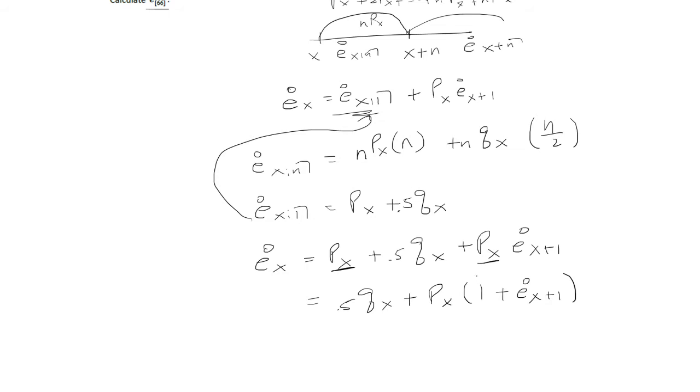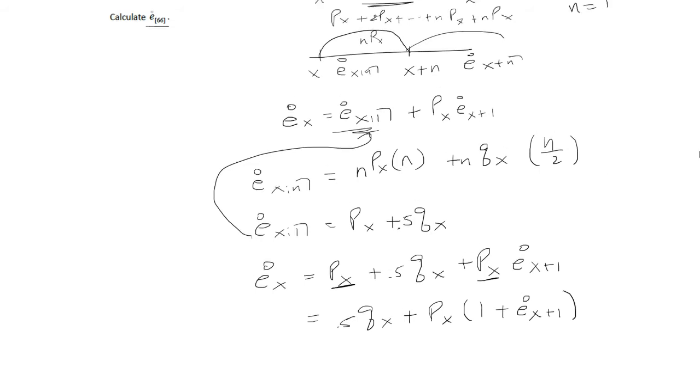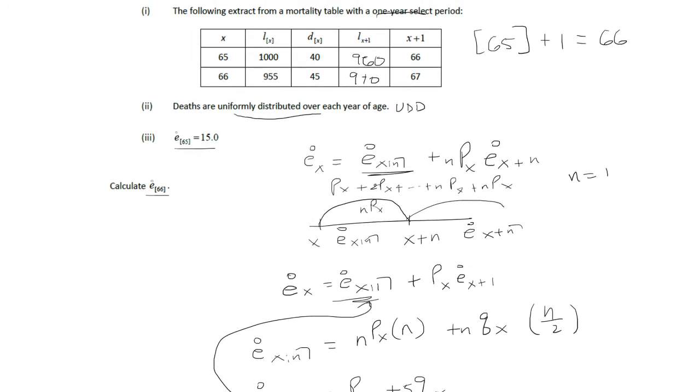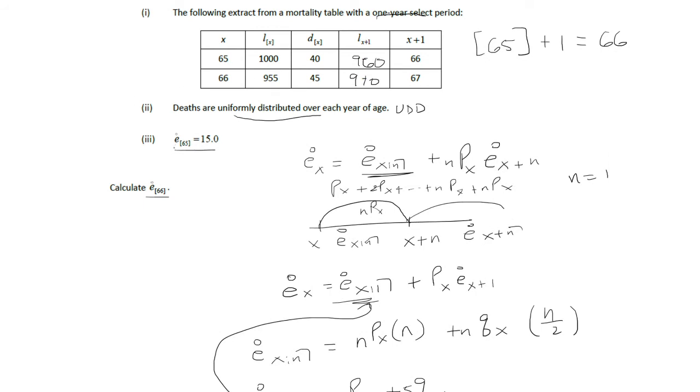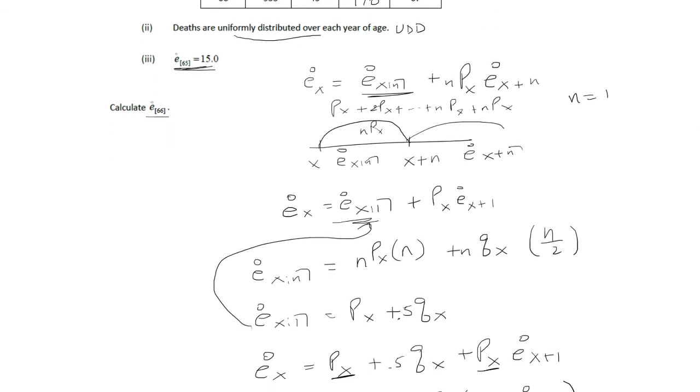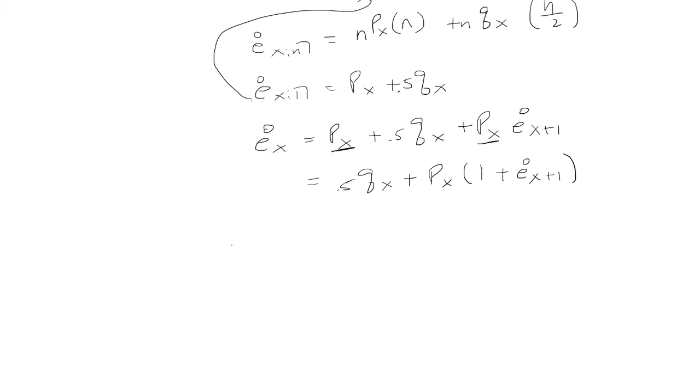All right, now I can begin. So the first one I'm going to be working with, go back up, so age 65. We're giving that it's 15, so let's work with that. And again this is select age 65, so I'm going to put a bracket for all the ages of 65.